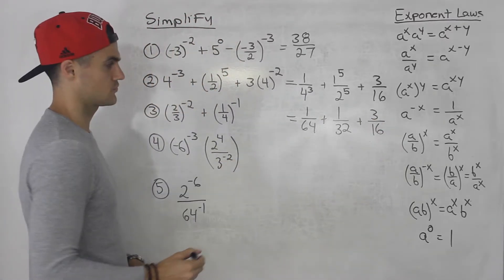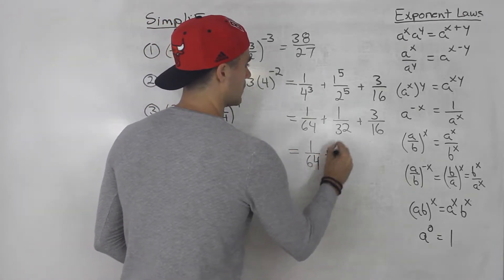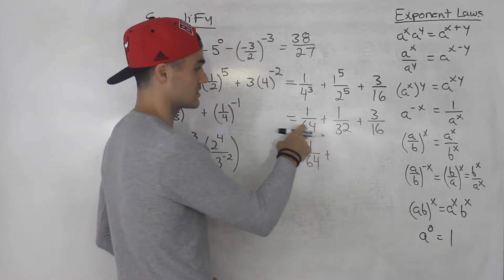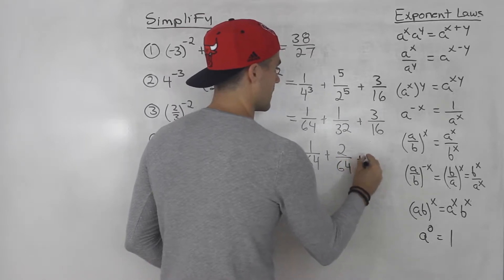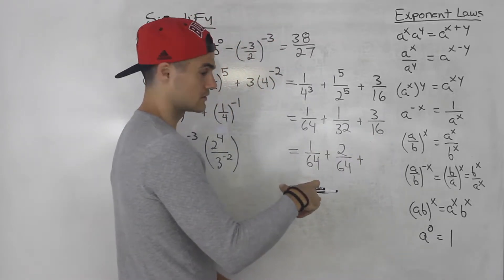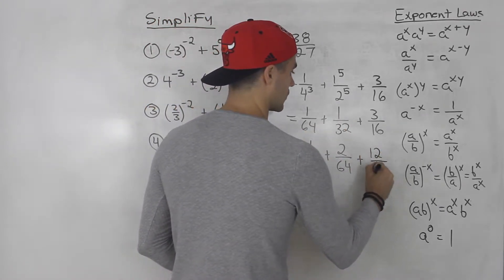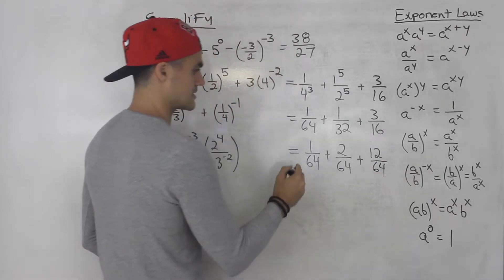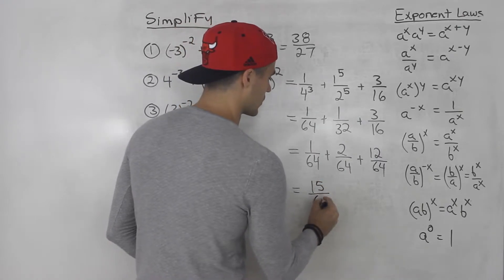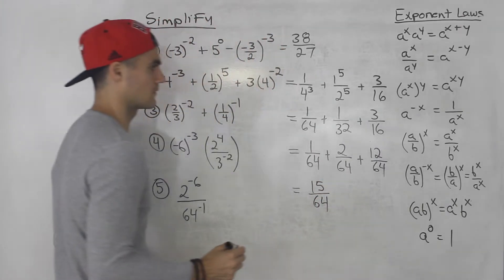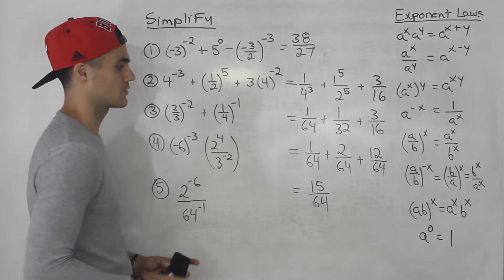So what's the lowest common denominator between all of these? 64. This stays as one over 64. One over 32 — multiply the 32 by two to get 64, multiply the top by two, so this ends up being two over 64. Multiply the 16 by four to get 64, multiply the top by four, so that ends up being 12 over 64. So this ends up being one plus two plus 12, which is 15 over 64. That's the final answer for number two.